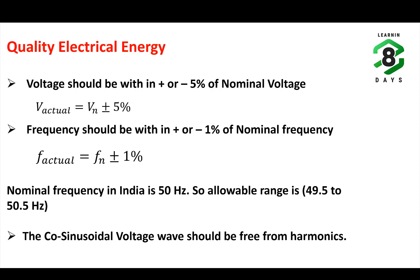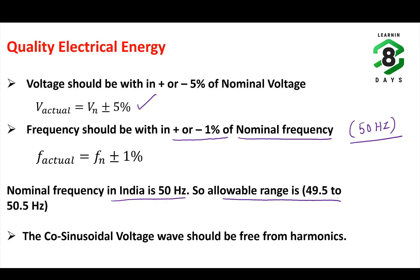What is quality electrical energy? Quality electrical energy should satisfy three parameters. First, the voltage should be within plus or minus five percent of the nominal voltage at any point in the power system. Second, the frequency should be within plus or minus one percent of the nominal frequency. In India, the nominal frequency is 50 Hz, so the allowable range for frequency is from 49.5 Hz to 50.5 Hz.